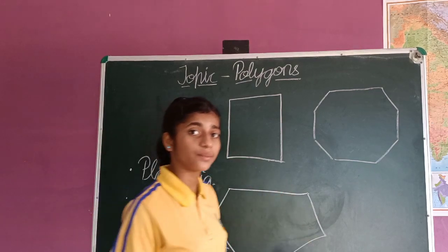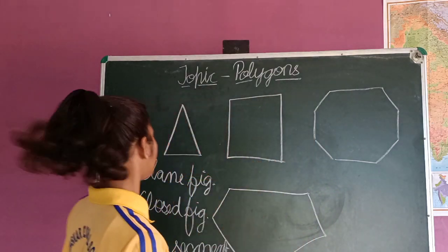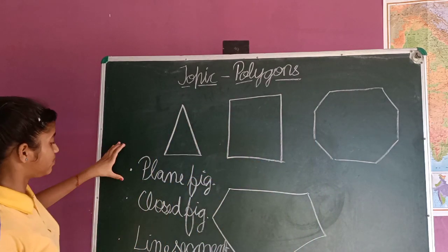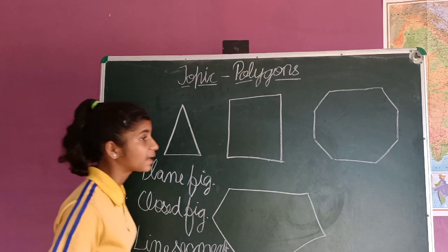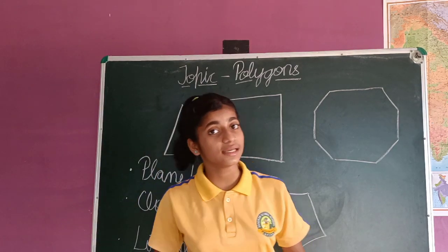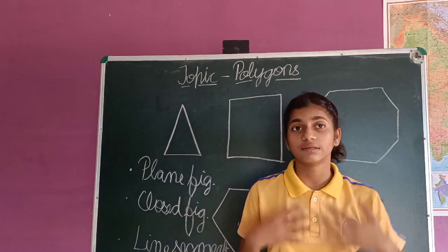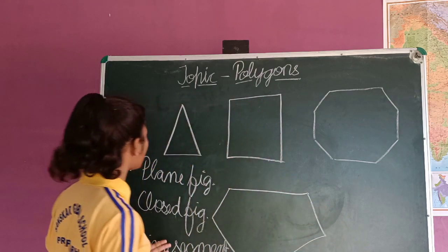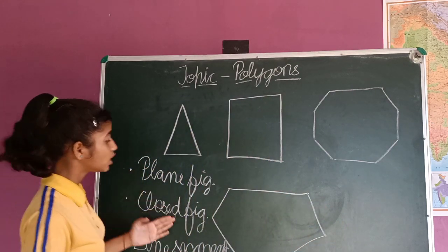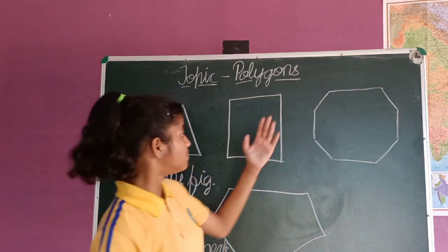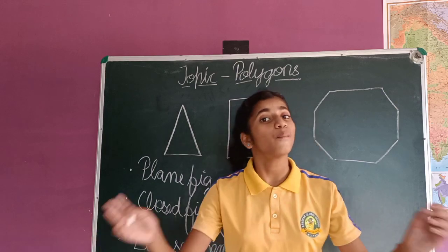If any shape is given and the question is asked whether these shapes are polygons or not, we check: is it a plain figure, a closed figure, and bounded by line segments? If yes, then it is a polygon. With these properties we can also form a definition: a simple plain closed figure which is bounded by different line segments is known as a polygon.